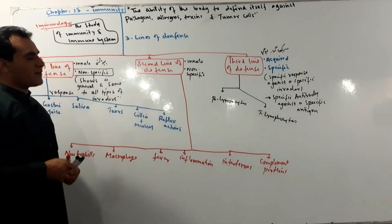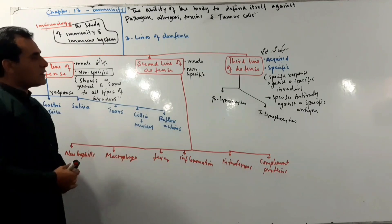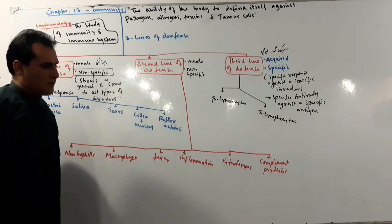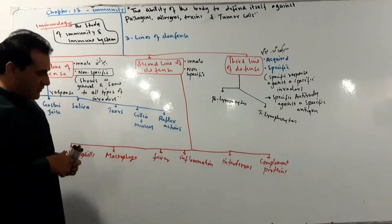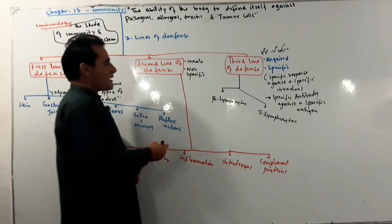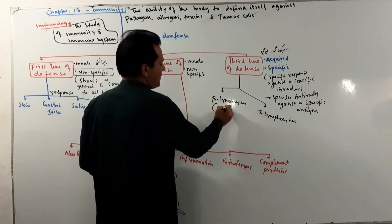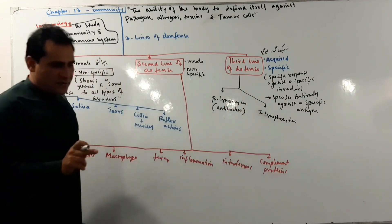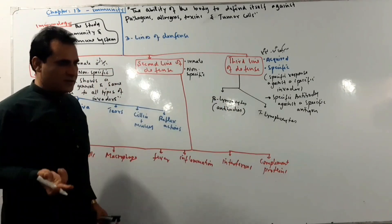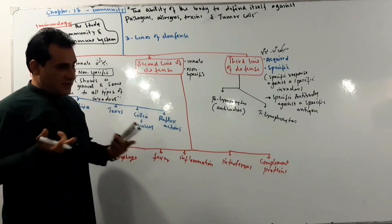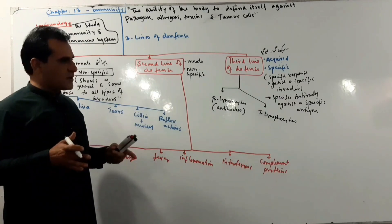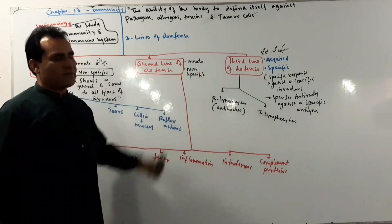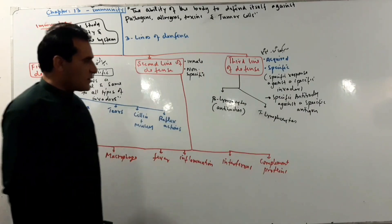The second line of defense is also non-specific. Then we have the third line of defense, where we have antibodies. Antibodies are antigen-specific — antibody, antigen-specific. The third line of defense is one discussion.